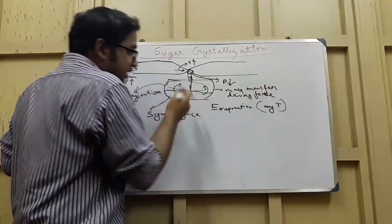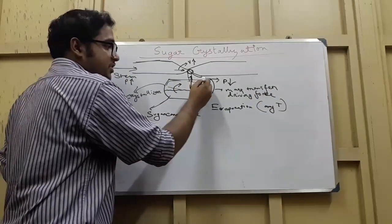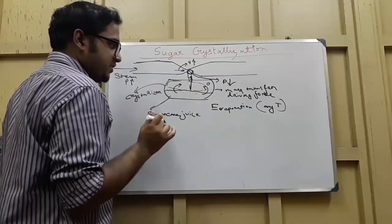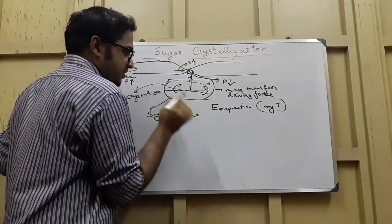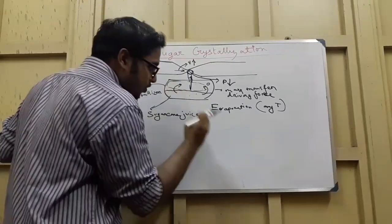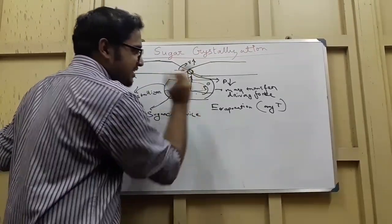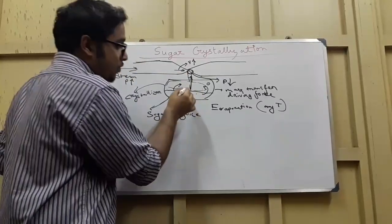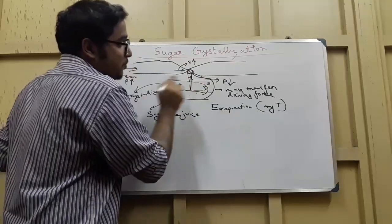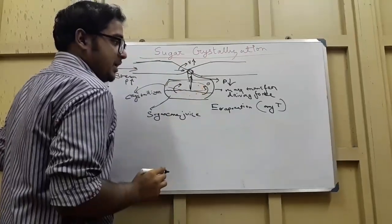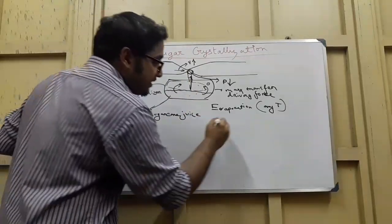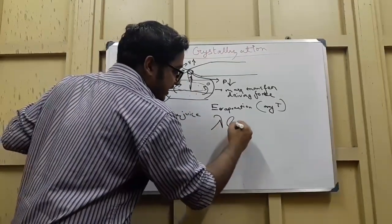Due to mass transfer driving force, here the concentration is zero, here the concentration is maximum sugar concentration. Due to zero humidity or zero pressure or zero concentration, it is a mass transfer driving force and a gradient is created, due to which there is a tendency of the water to convert into vapor and take this place. Now as soon as the water is converted to vapor, where will it gain its lambda, that is latent heat from?